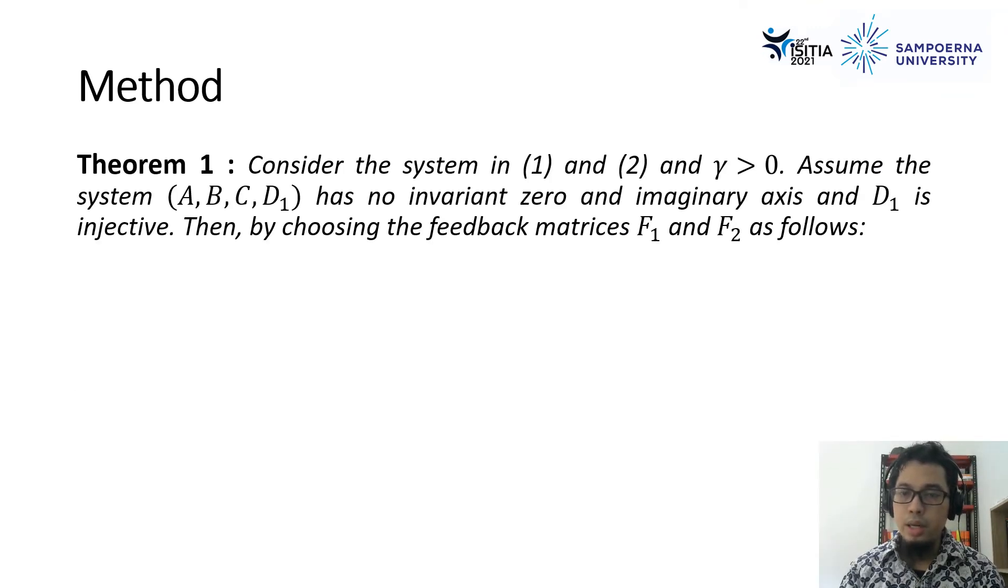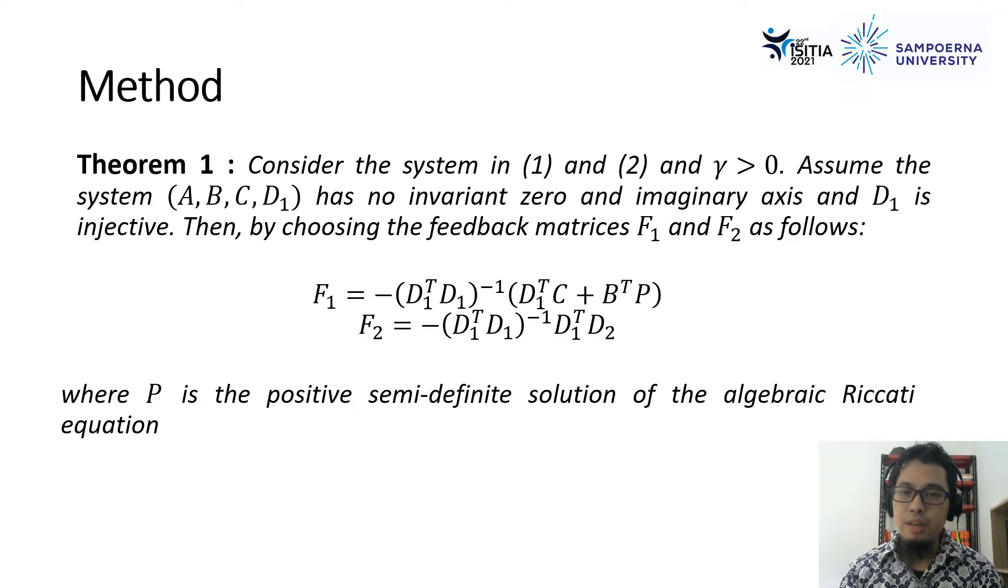Continuing the theorem one, F1 and F2 are defined as follows. This is the equation for F1 and F2. In the F1, we have the notation of P, which is the positive semi-definite solution of the algebraic Riccati equations.